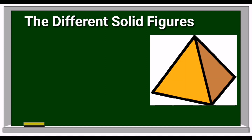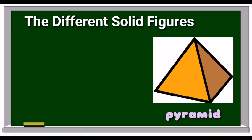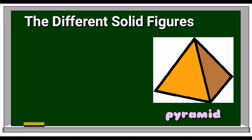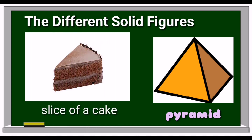The fourth one is pyramid. A pyramid is a polyhedron formed by connecting a polygonal base and a point called the apex. Each base edge and apex form a triangle called a lateral face. An example of an object that resembles this is a slice of cake.